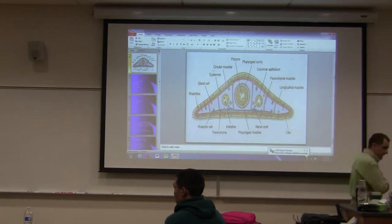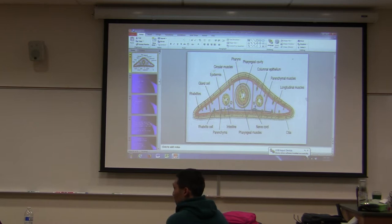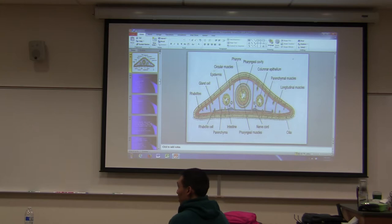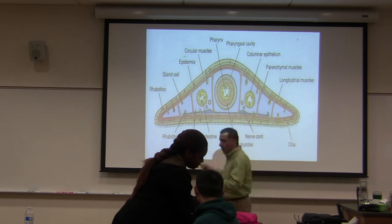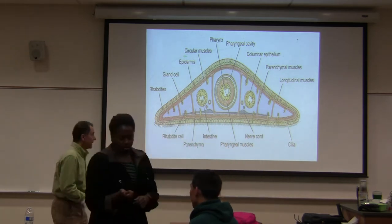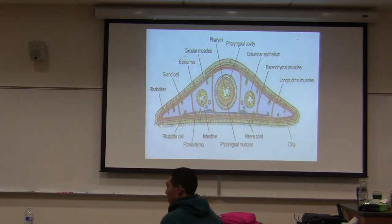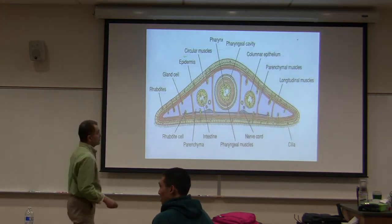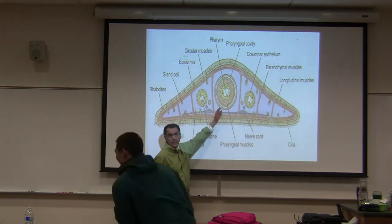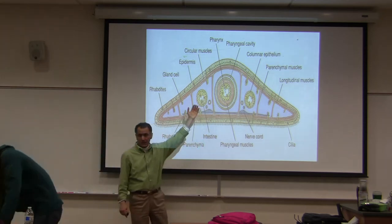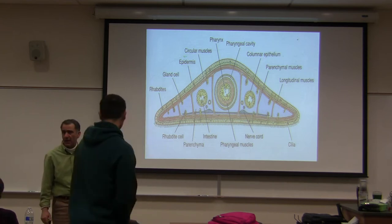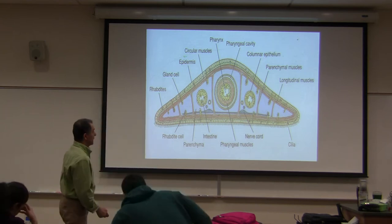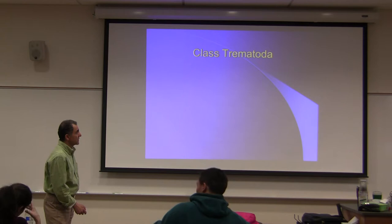This is where we left off last time. We talked about cross-sections of these organisms, all of the structures. The next class - this belongs to class Turbellaria. The cross-section of Planaria - Dugesia is the genus name, Planaria is the common name. The next class is class Trematoda.